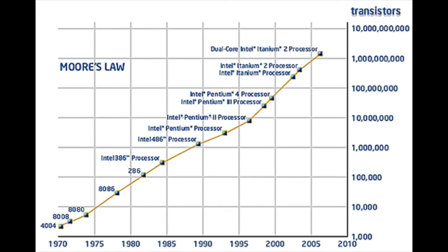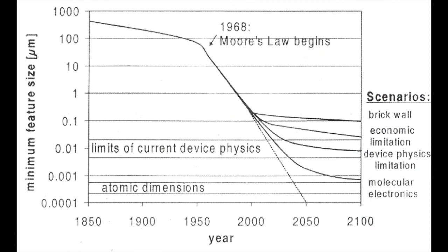This is evidenced by the graph of transistors per chip over time with Intel's processors. Although up to this point it has been possible to decrease the size of transistors, this will eventually be impossible, as there is a limit to how small transistors can be, and most likely a limit to how small transistors can be produced, even if they can theoretically be smaller.